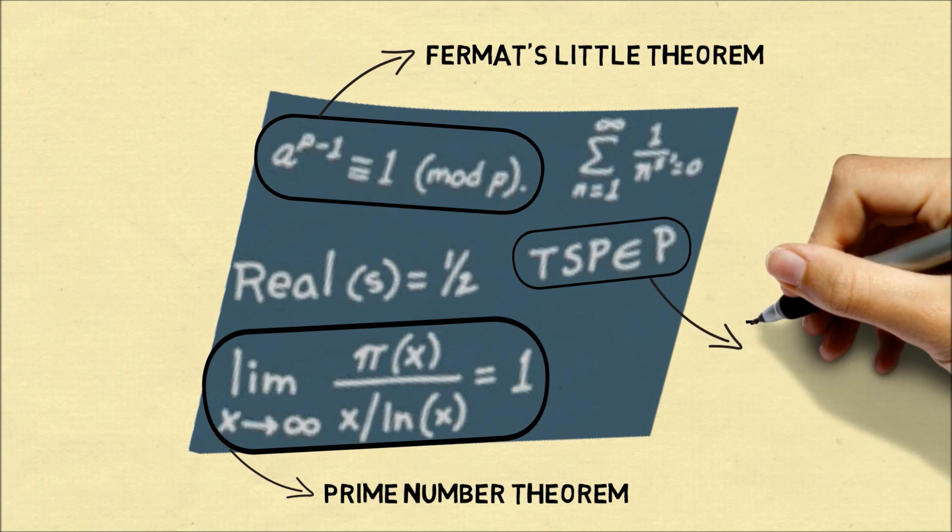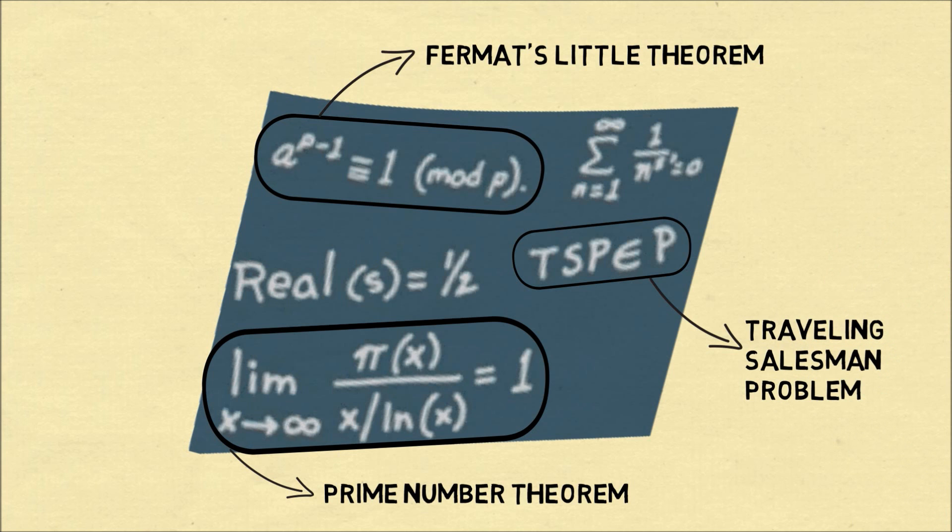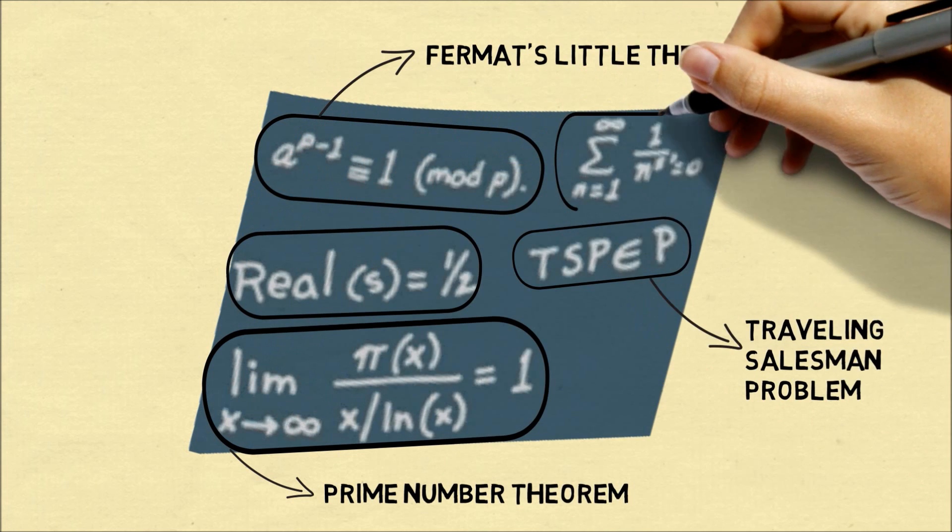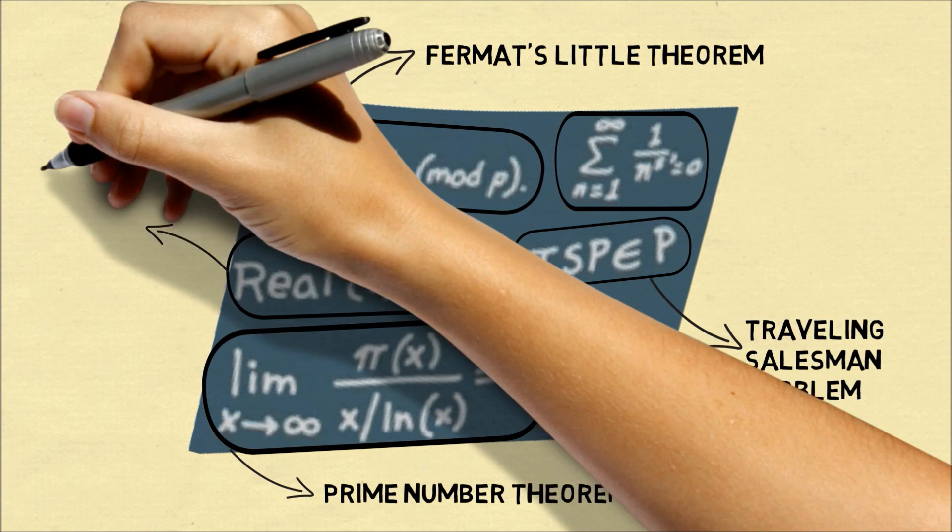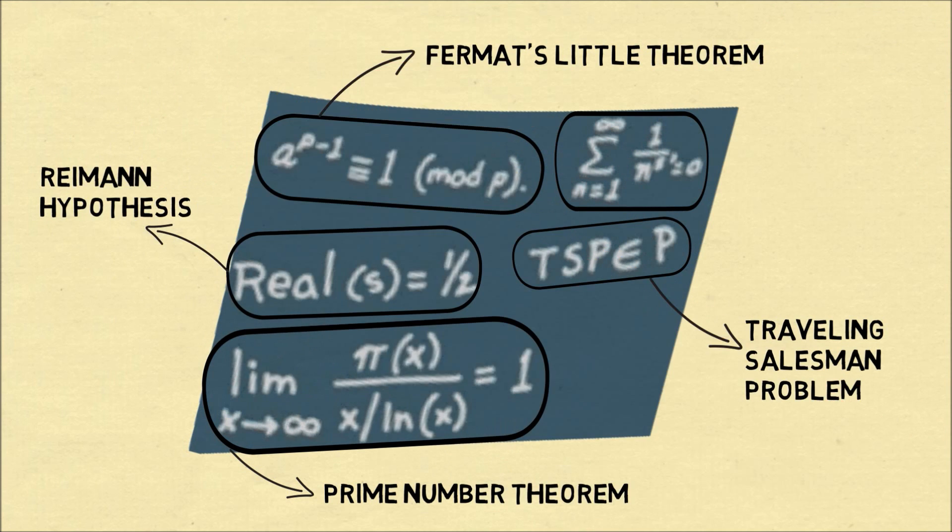This TSP is in P refers to the traveling salesman problem, which is actually an unsolved problem, but there's a claim here that it's known in polynomial time. The remaining equations are also from an unsolved problem known as the Riemann Hypothesis.